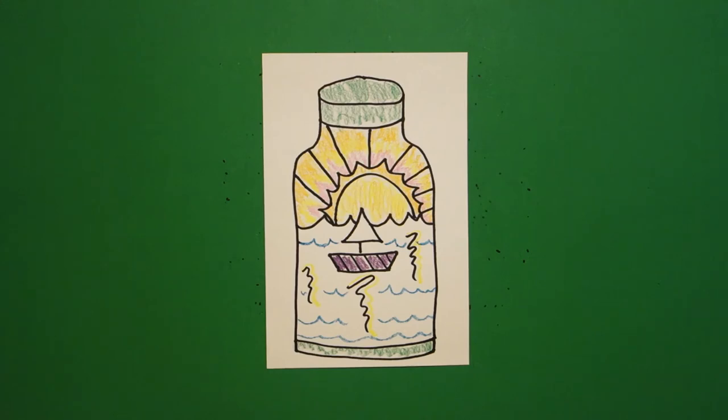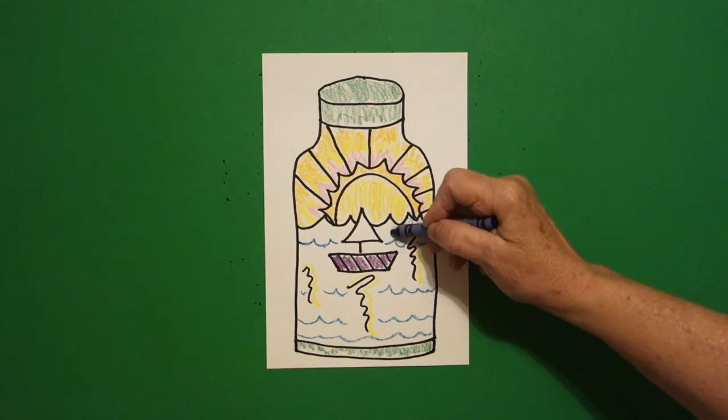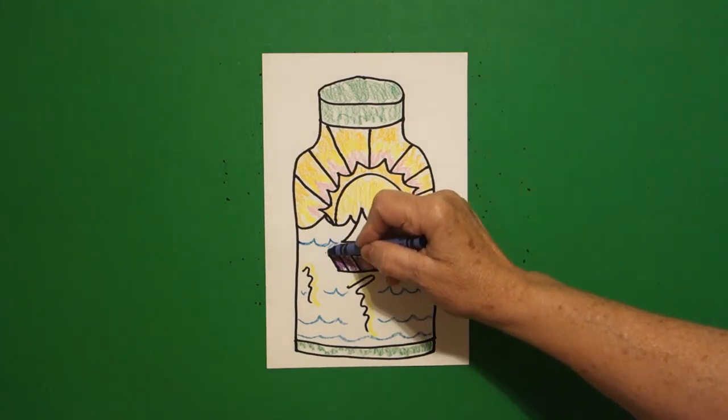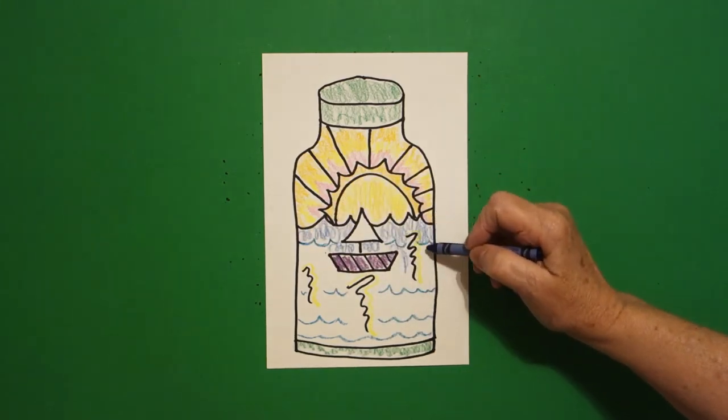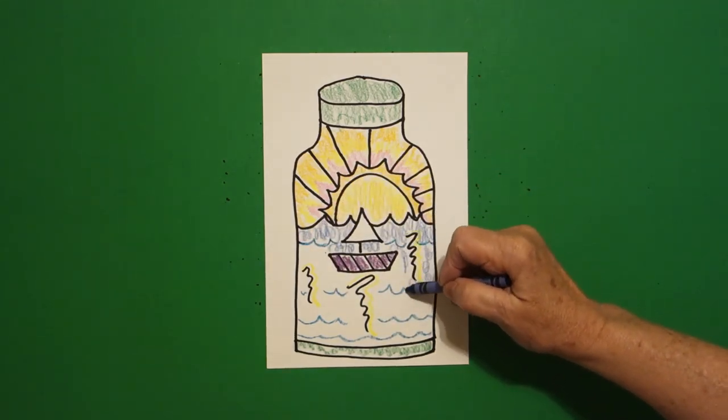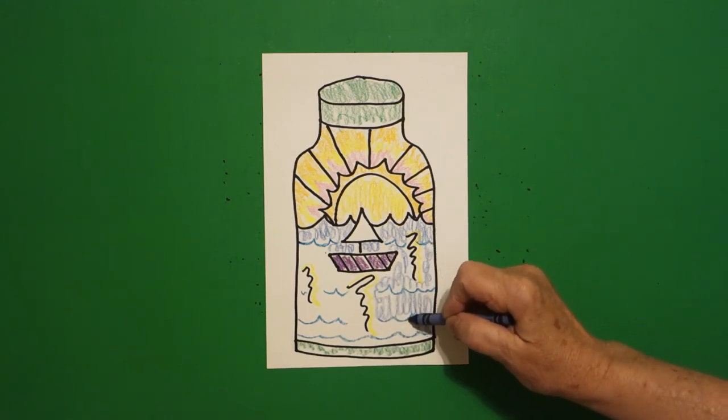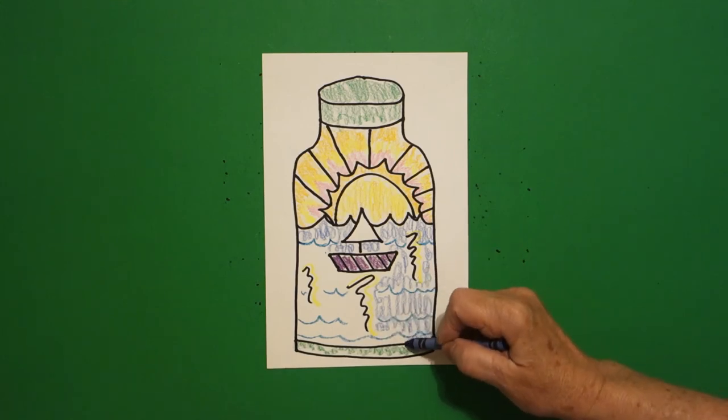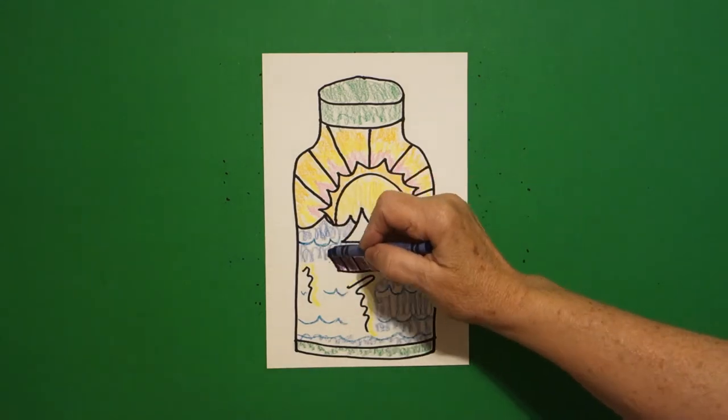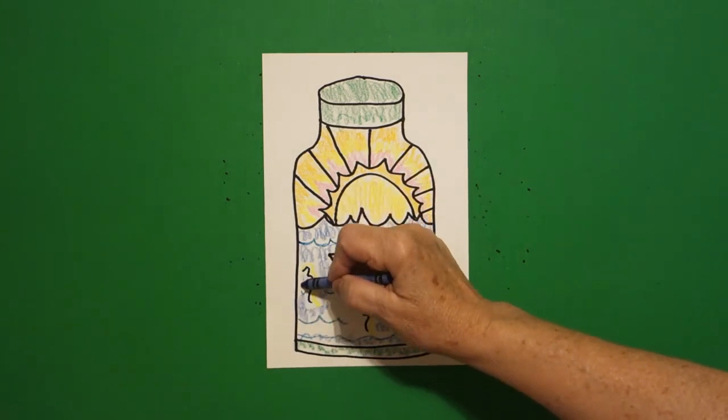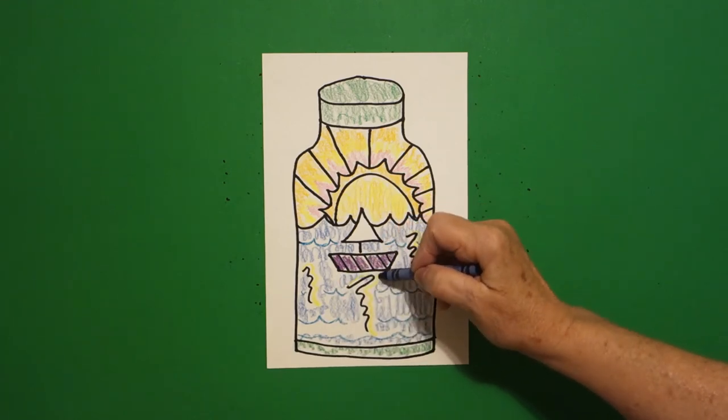Then, using my blue, I'm going to loop-de-loop my water. Go all the way across. Up and down. Now, when you get next to the yellow that you did on your shimmers, just go ahead and be careful not to go into that. Because if it's blue with yellow, you'll end up with green, which is okay, but we kind of want to keep that yellow all the way through.